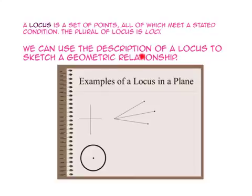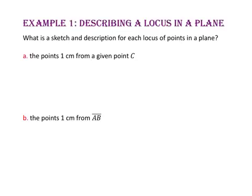Here are three examples of loci in a plane. In example 1, we will describe a locus in a plane — what is a sketch and description for each locus of points in a plane? For part A, we want the points one centimeter from a given point C.